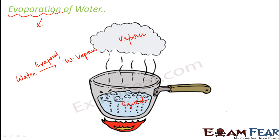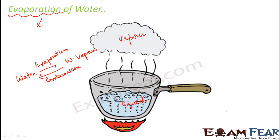Now what kind of change is evaporation? Is it reversible or irreversible? Can you bring back water from water vapor — can you change water vapor back to liquid water? Yes, and that process is called condensation. So basically if you start cooling the water vapor, all you get is liquid water. That is why evaporation is a reversible change.